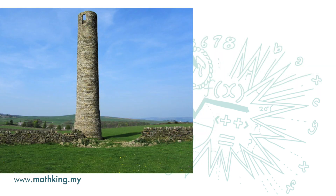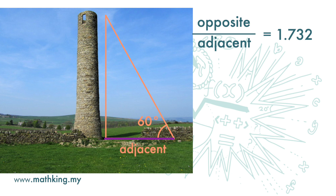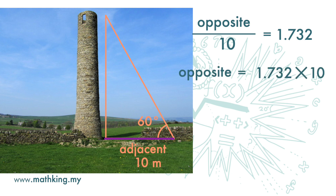Similarly, here we have a tower. If we want to know the height of the tower, with the knowledge that the ratio of the opposite side to the adjacent side of a 60 degree angle is 1.732, we need only to draw a 60 degree angle here. Measuring the length of the adjacent side is easy, and we can then calculate the height of the tower. For a 60 degree angle, if we measure the adjacent side and find it to be 10 meters, then the length of the opposite side is 1.732 times 10, which is 17.32 meters. This is the height of the tower.